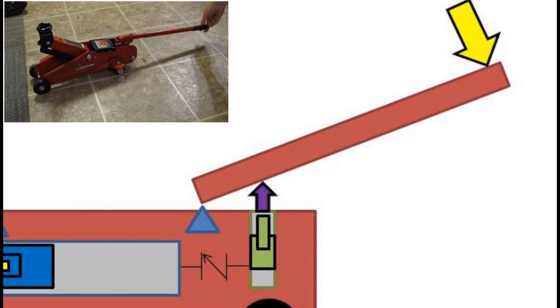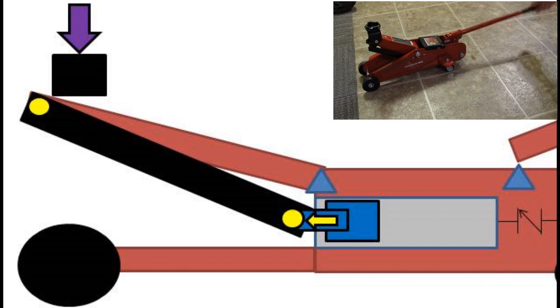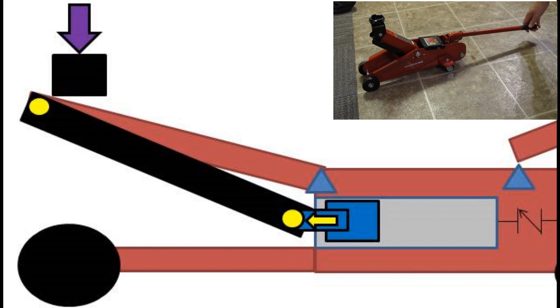After the lever is raised again, more fluid is allowed to go into the small piston cylinder. The hydraulic fluid pressure builds up in a chamber with the large piston until the pressure is great enough to push up on the load arm of the jack.